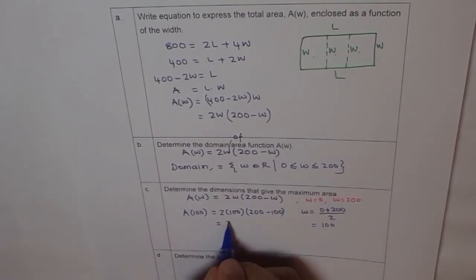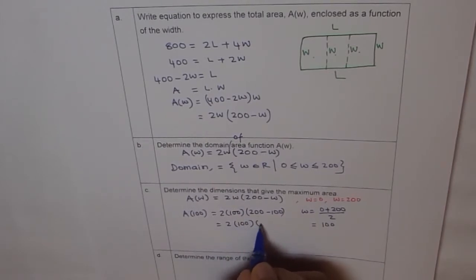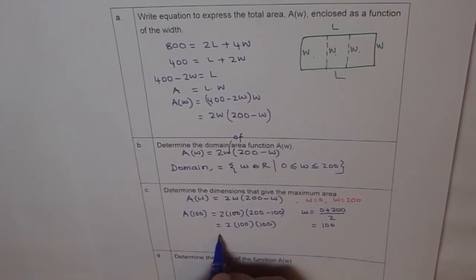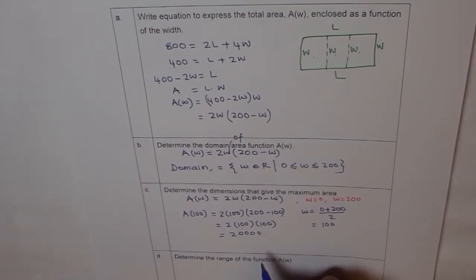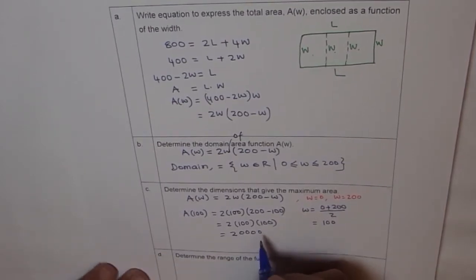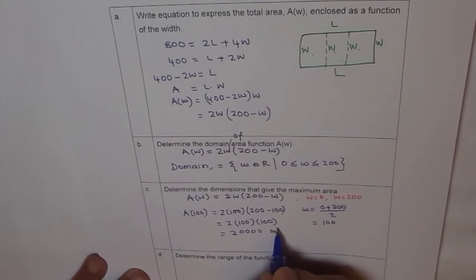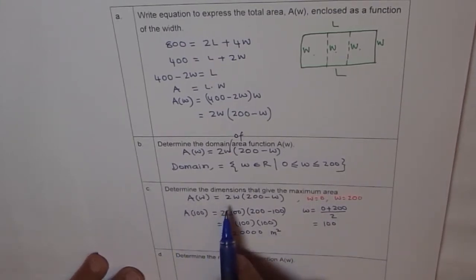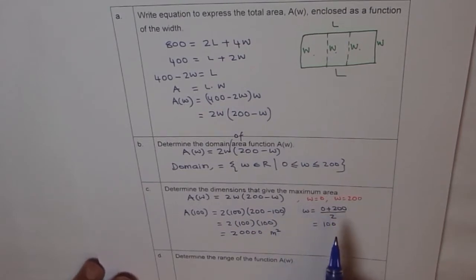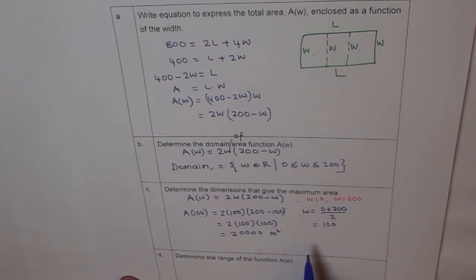Which is 2 times 100, so we get 2, 1, 2, 3, 4 zeros. So that's our maximum area. And the units are meter. So this will be so much meter here. So that's the maximum area. So determine the dimensions that give maximum area. They don't really want the maximum area. They want the dimensions. So now we know, for a width of 100, we get maximum area.